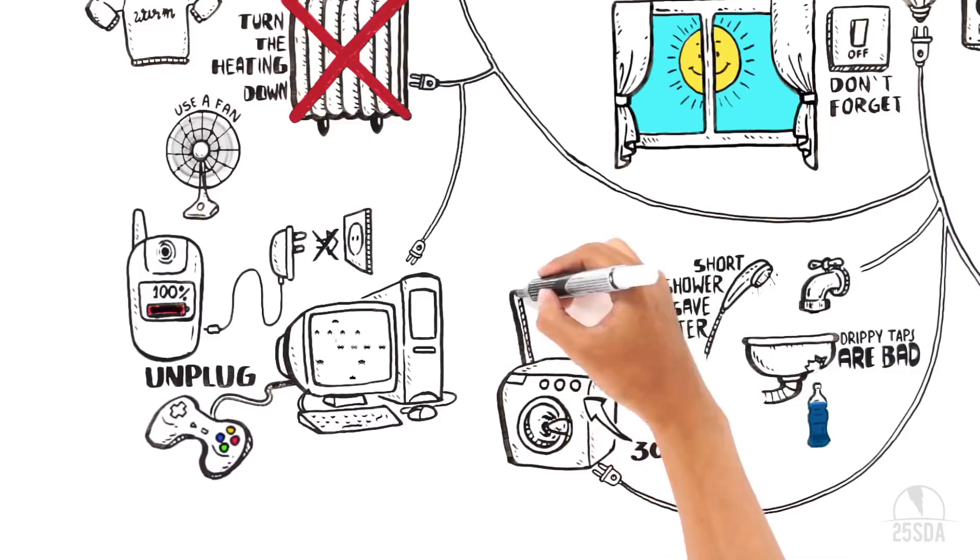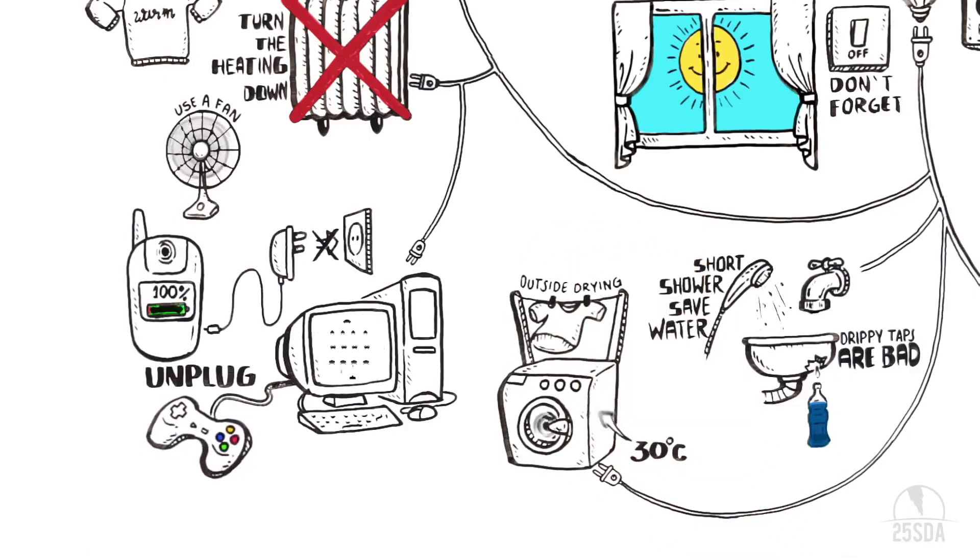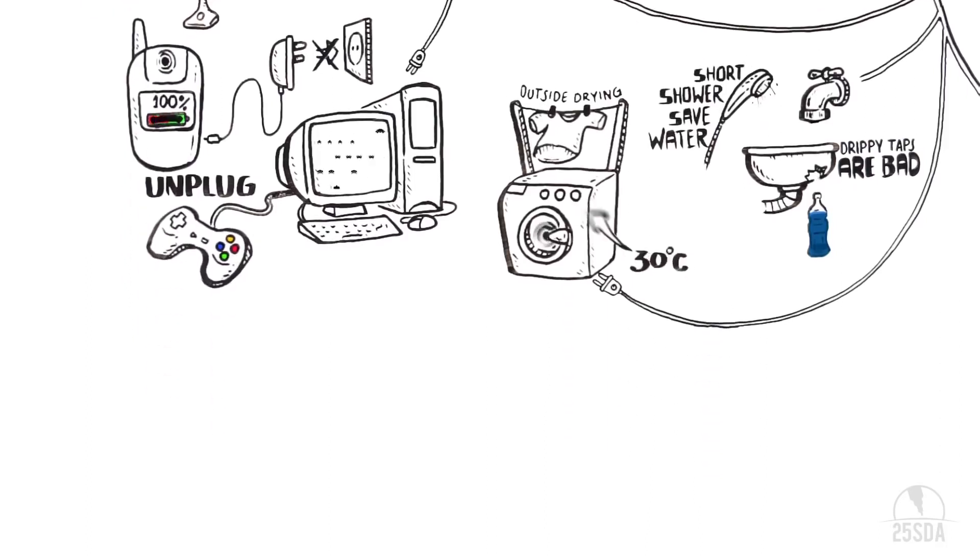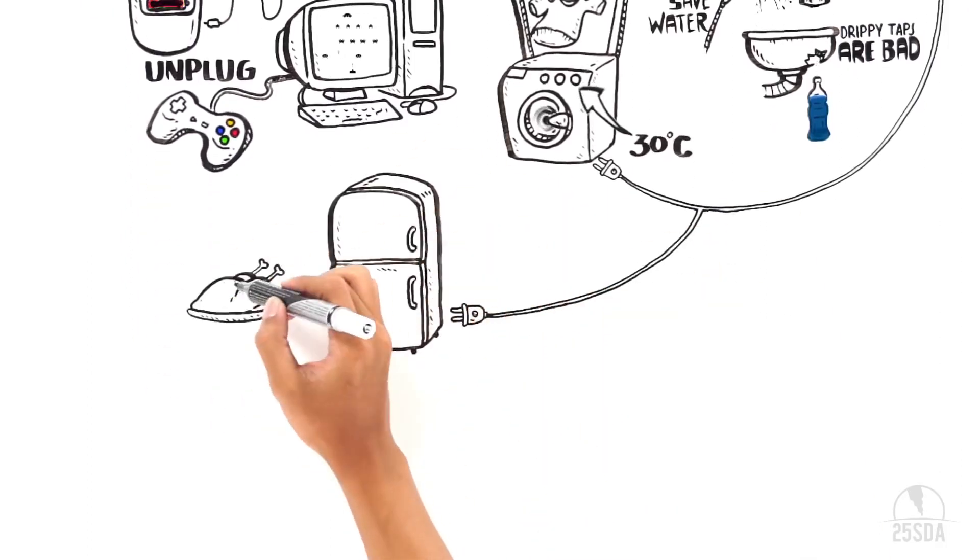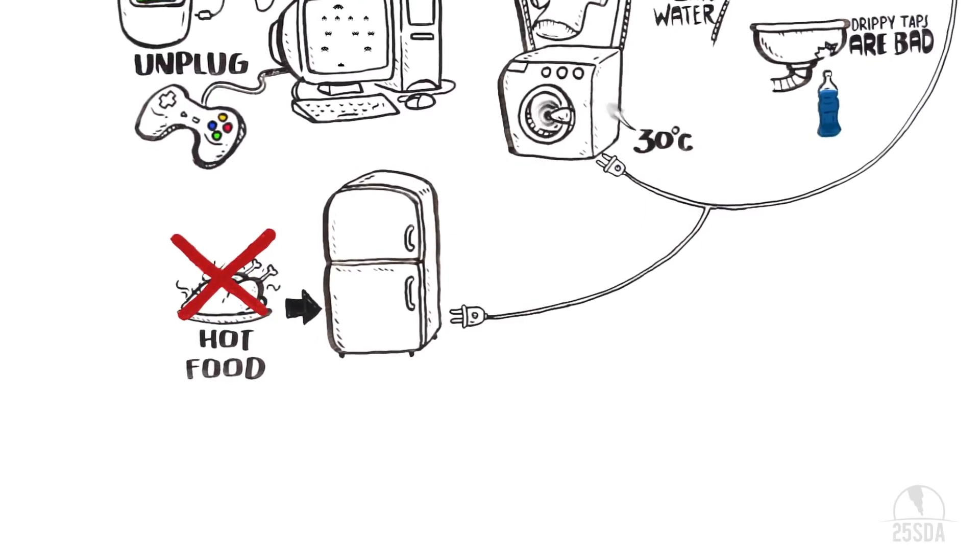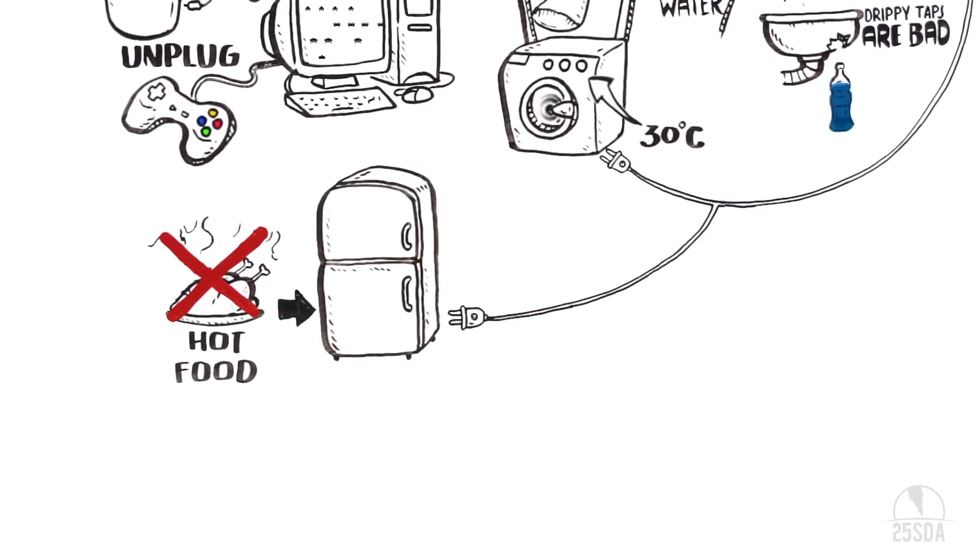Set your washing machine to wash at 30 degrees Celsius. Dry your clothes outside instead of using a tumble dryer. Close the fridge door and never put a hot meal in the fridge. It takes a lot of energy to cool it down.